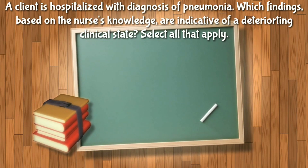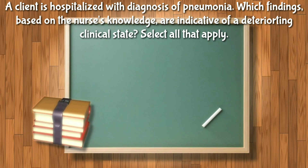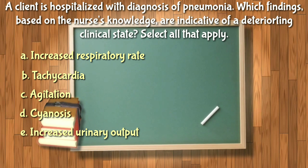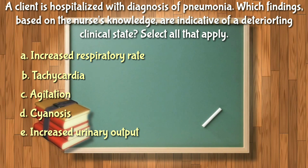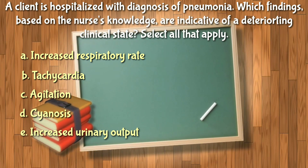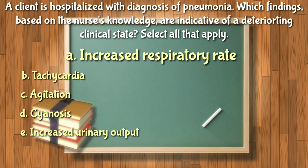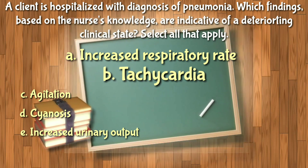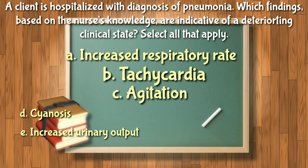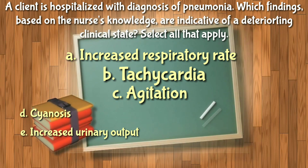Next question: A client is hospitalized with a diagnosis of pneumonia. Which findings are indicative of a deteriorating clinical state? Select all that apply. Increased respiratory rate is included, and tachycardia is also included — tachycardia and agitation are early signs of respiratory stress. So letters A, B, and C are on the list.